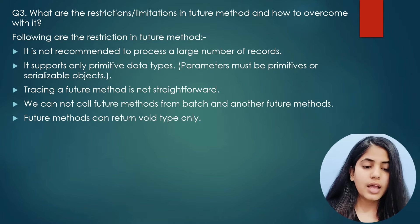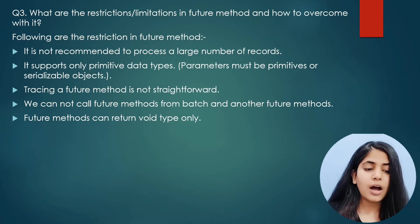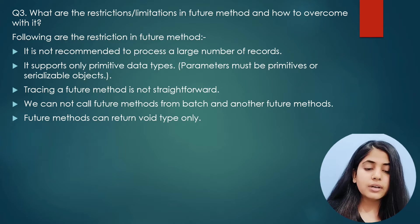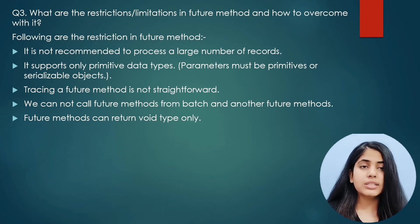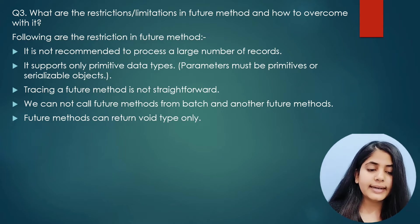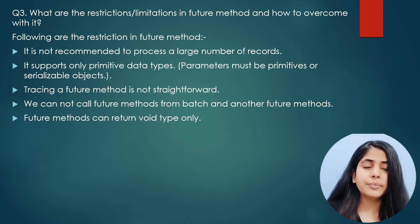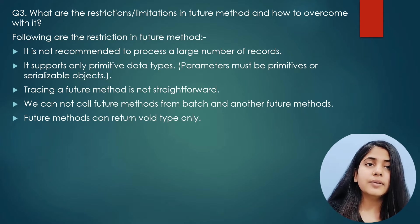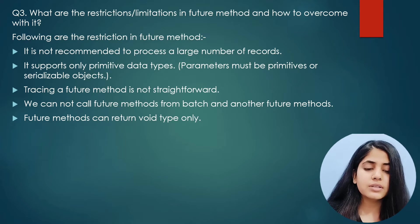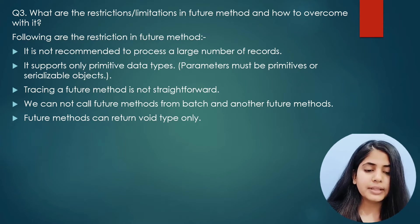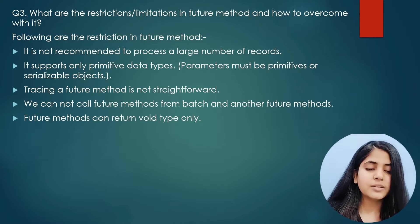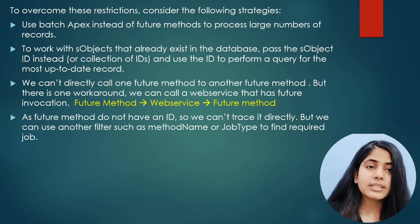The next question was: what are the restrictions or limitations of future methods and how to overcome them? The restrictions in future methods are: it is recommended not to process a large number of records in future methods; it supports only primitive data types and parameters must be defined as primitive data types, though you can also pass a wrapper class; tracing of a future method is not straightforward because future methods return only void type; you cannot call a future method from another future method; you also cannot call a future method from batch Apex; and future methods can only return void type.